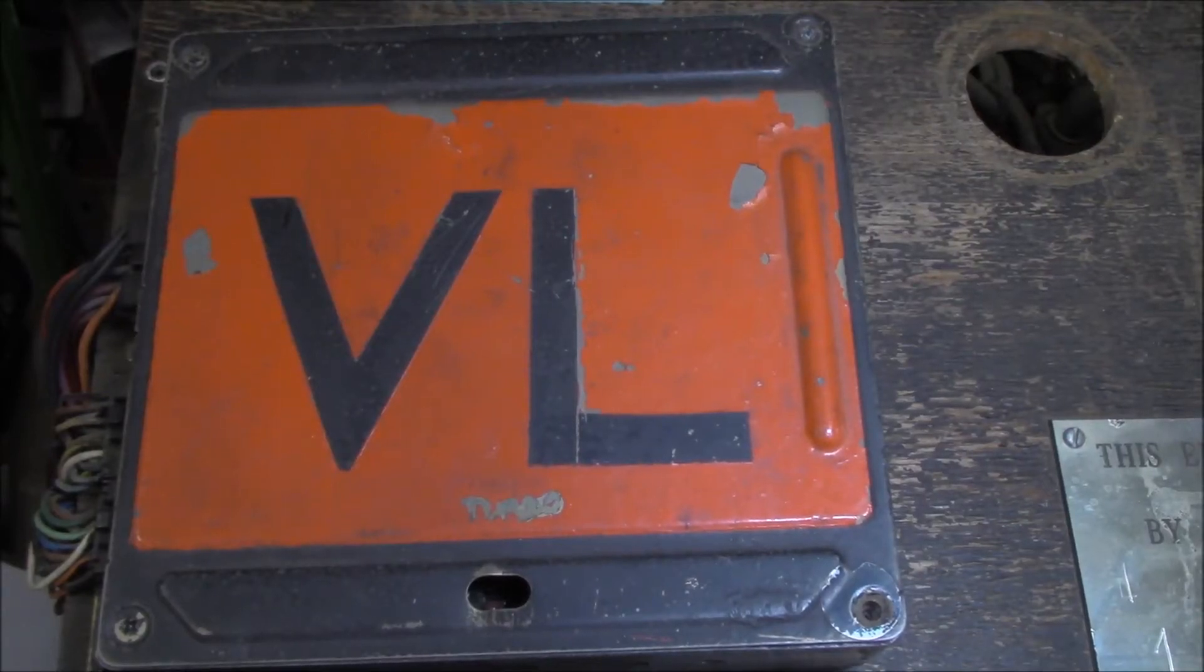Next on the list is what came out in the VL Commodore, the RB30 mate. It was well known as a fully sick engine.